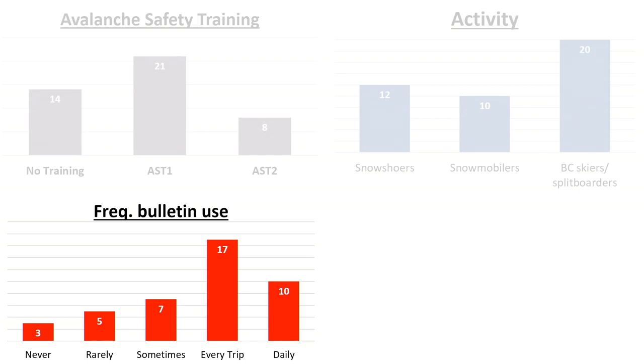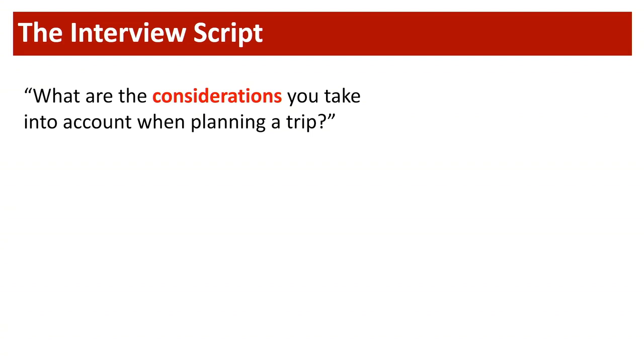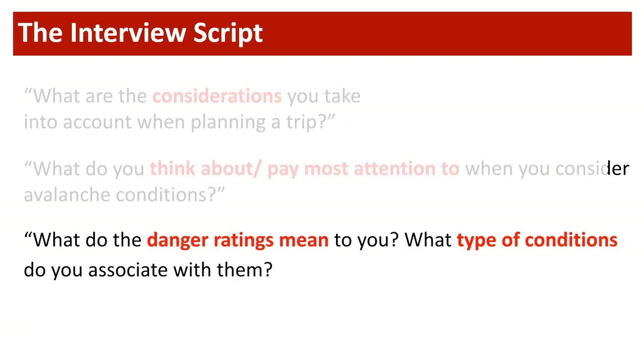So what types of things did we ask in the interviews? We had hour-long, semi-structured interviews with a script that facilitated conversation about planning process and about habits and routines. We would start every interview with very open questions like, 'What are the considerations you take into account when you're planning a trip?' We had lots of questions about information sources — where do people go to get information about avalanche conditions and weather, and what do they pay most attention to when looking at that information?